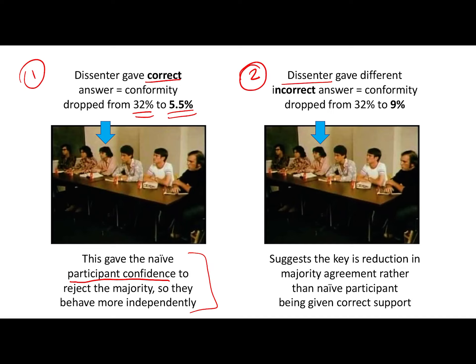In the second variation, where the dissenter gave a different incorrect answer, conformity still dropped — not as much as in the first variation, but still down to 9%. This is very interesting because it suggests that the dissenting confederate is not necessarily providing useful information, but rather giving the participant the confidence to answer independently by breaking the unanimity of the group and providing social support. It suggests the key factor is the reduction in majority agreement rather than the naive participant being given correct information.